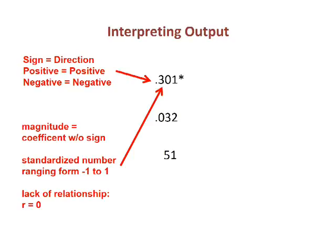Pearson's R is a standardized coefficient ranging from minus 1 to plus 1. The magnitude of the relationship is the number without the sign, and we use the interpretation for standardized magnitudes mentioned in the video titled An Introduction to Inferential Statistics. Here, Pearson's R indicates a moderate relationship. Thus, we have a moderate positive relationship between the log of population density and the log of the violent crime rate.